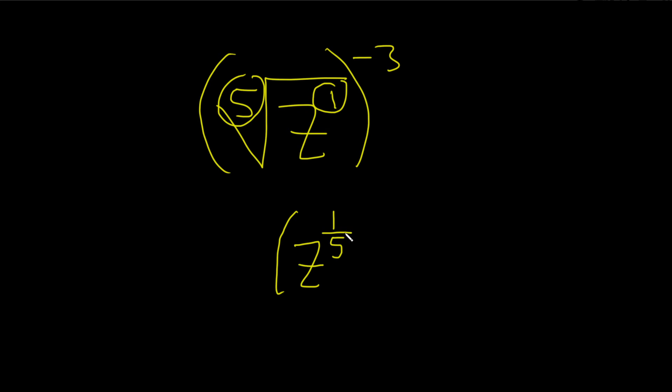Then we have parentheses, and then we have the negative 3. Again, it's always this number over this number. Now we can multiply. Negative 3 times 1 fifth is negative 3 fifths.